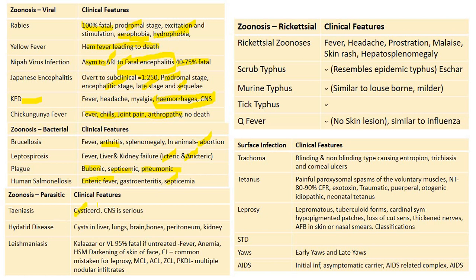Plague presents as bubonic, septicemic, and pneumonic forms; the pneumonic form is the infective type. Human salmonellosis presents with enteric fever, gastroenteritis, and septicemia. Taeniasis presents as cystic; it will not present with symptoms unless there are pressure effects, especially in the abdomen and brain. Hydatid disease has cysts in lungs, liver, brain, bones, peritoneum, and kidney. Visceral leishmaniasis (kala-azar) is 95% fatal if untreated, associated with fever, anemia, hepatosplenomegaly, and darkening of facial skin.